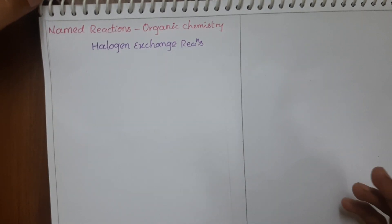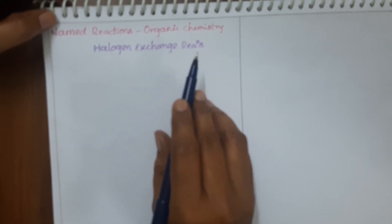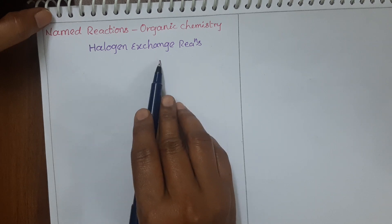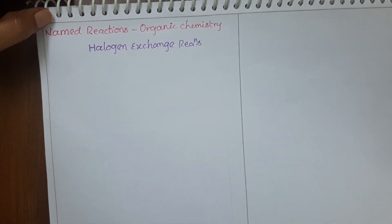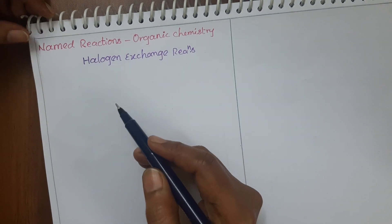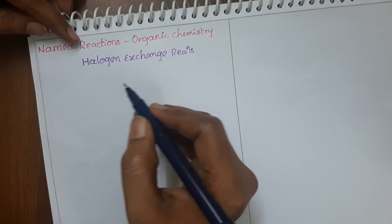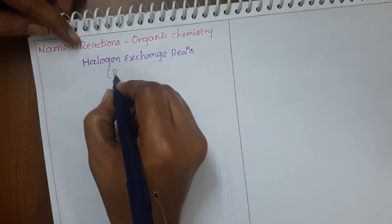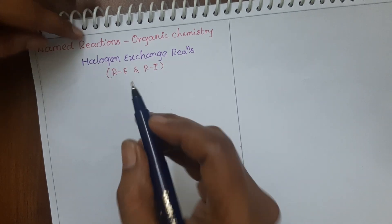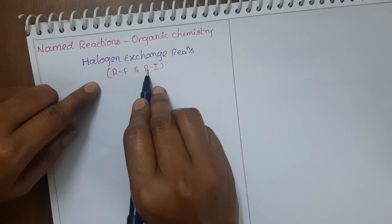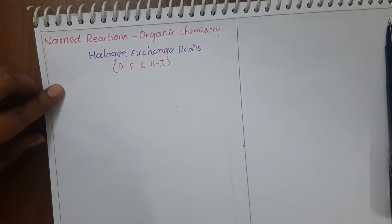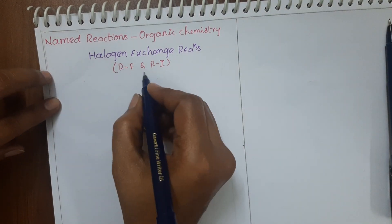In these named reactions, first of all let us see the halogen exchange reactions. These reactions are present in Haloalkanes and Haloarenes. From these halogen exchange reactions, what we are going to prepare is alkyl fluorides and also alkyl iodides. For the preparation of alkyl fluorides and alkyl iodides we have halogen exchange reactions. There are two halogen exchange reactions.